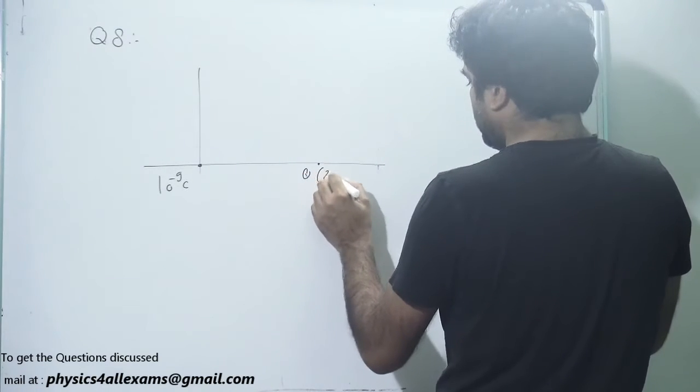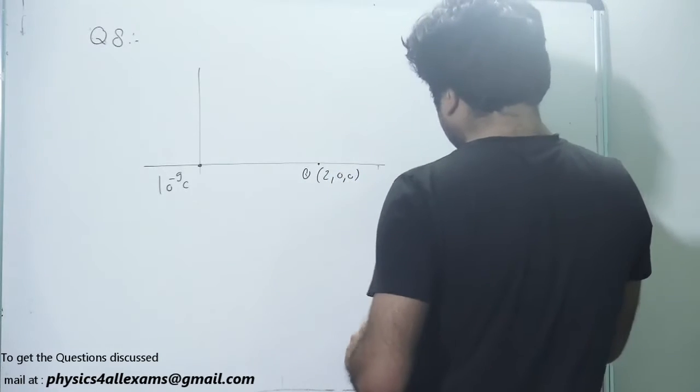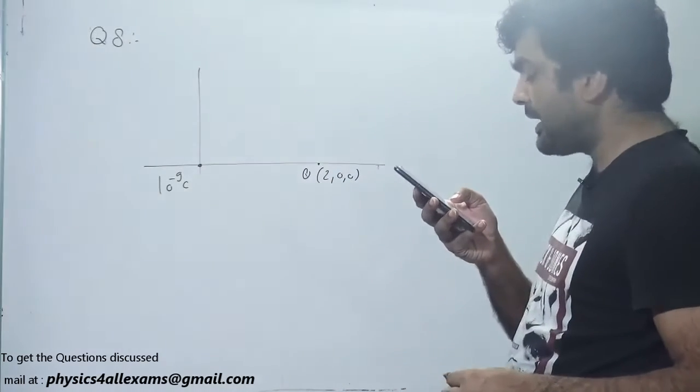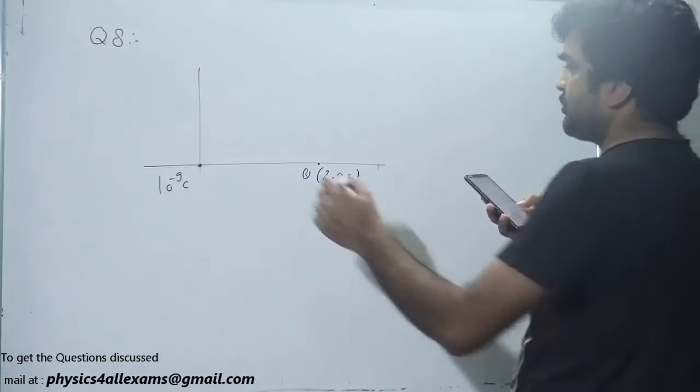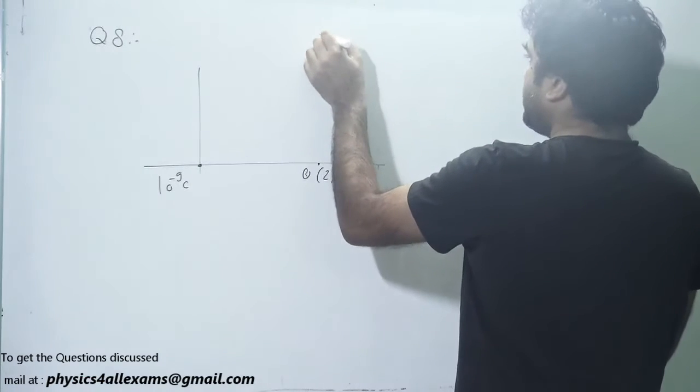Q is at (2,0,0). If the x-component of electric field at (3,1,1) is 0, there is a point (3,1,1). The x-component of electric field,